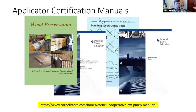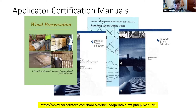We have applicator certification manuals — we write and publish those manuals, which you can use to study for your certification exam. You can purchase those online through the Cornell Store. The manuals of interest to you would include fruit and vegetables — category 22 and 23 — as well as the core manual.